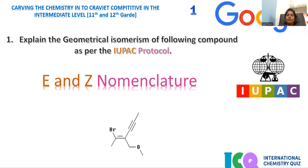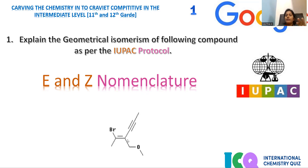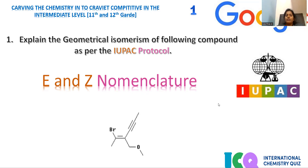Let's discuss question number one, which is collected for IUPAC nomenclature. Explain the geometrical isomerism of the following compound as per the IUPAC protocol. Geometrical isomerism stands for the orientation of functional groups around the carbon-carbon double bond where rotation is restricted. The double bond is very rigid in nature so that flipping of the double bond is not possible. E/Z nomenclature is applicable whenever a carbon-carbon double bond is accompanied by four different functional groups.